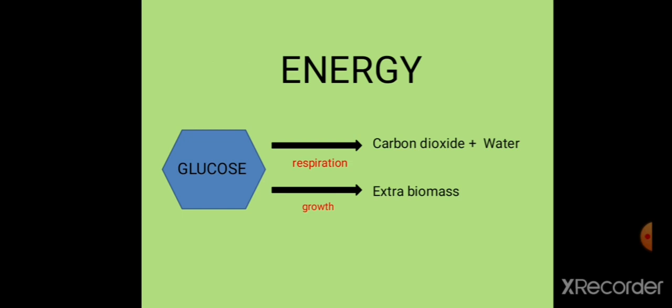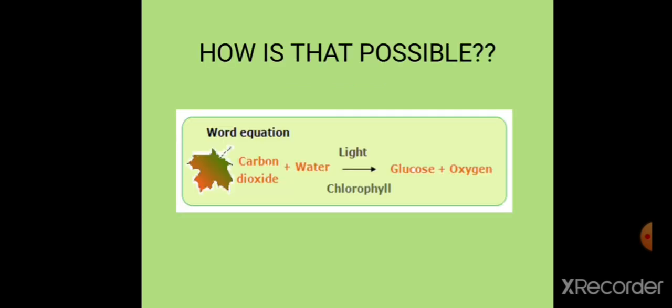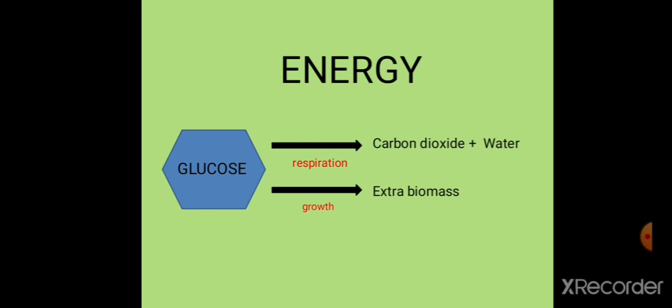Photosynthesis stores energy while respiration releases energy. Always remember: respiration is the reverse of photosynthesis. In photosynthesis you begin with carbon dioxide and water; in respiration you begin with glucose and oxygen, and to the right-hand side of the arrow you get carbon dioxide and water. A plant uses half the glucose it makes to release energy through respiration.